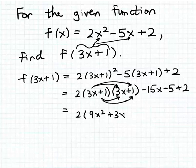1 times 3x, again, is plus 3x. And then 1 times 1, of course, is 1. And now don't forget we have this minus 15x here at the end. And then minus 5 plus 2, we can go ahead and add minus 5 plus 2 together. That gives us minus 3.